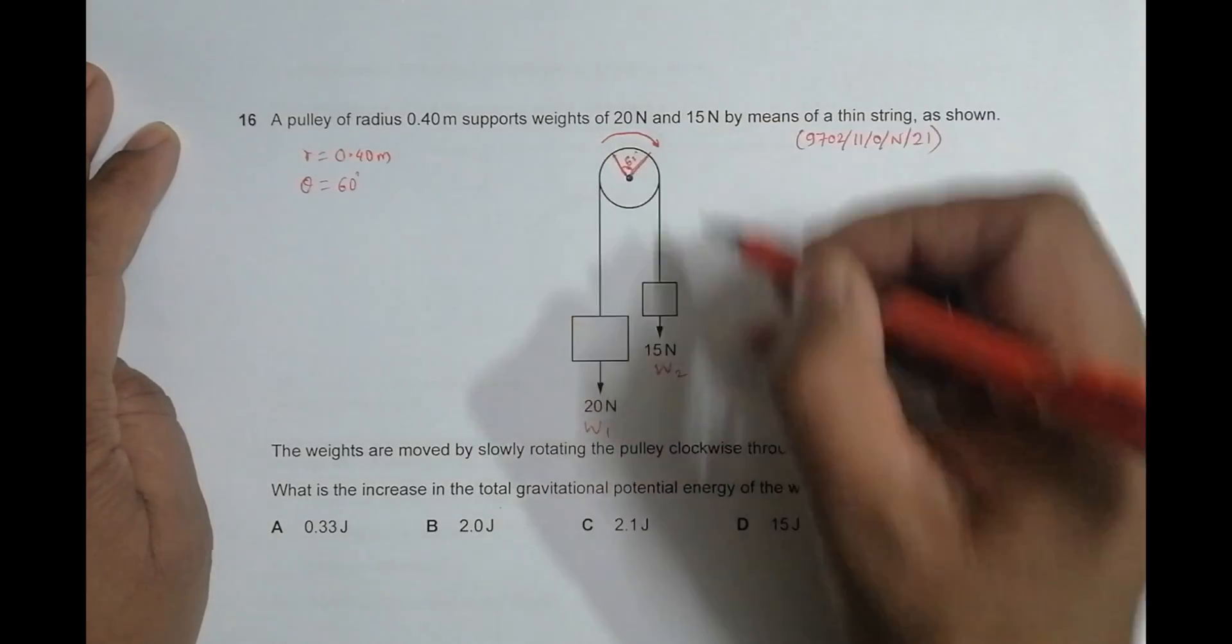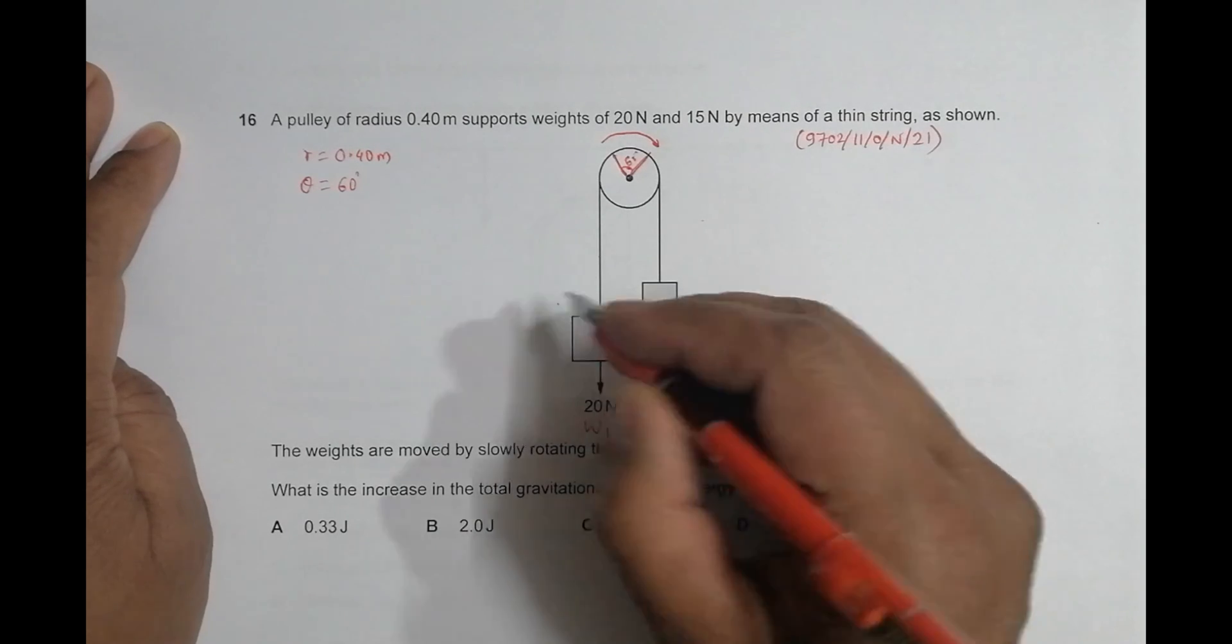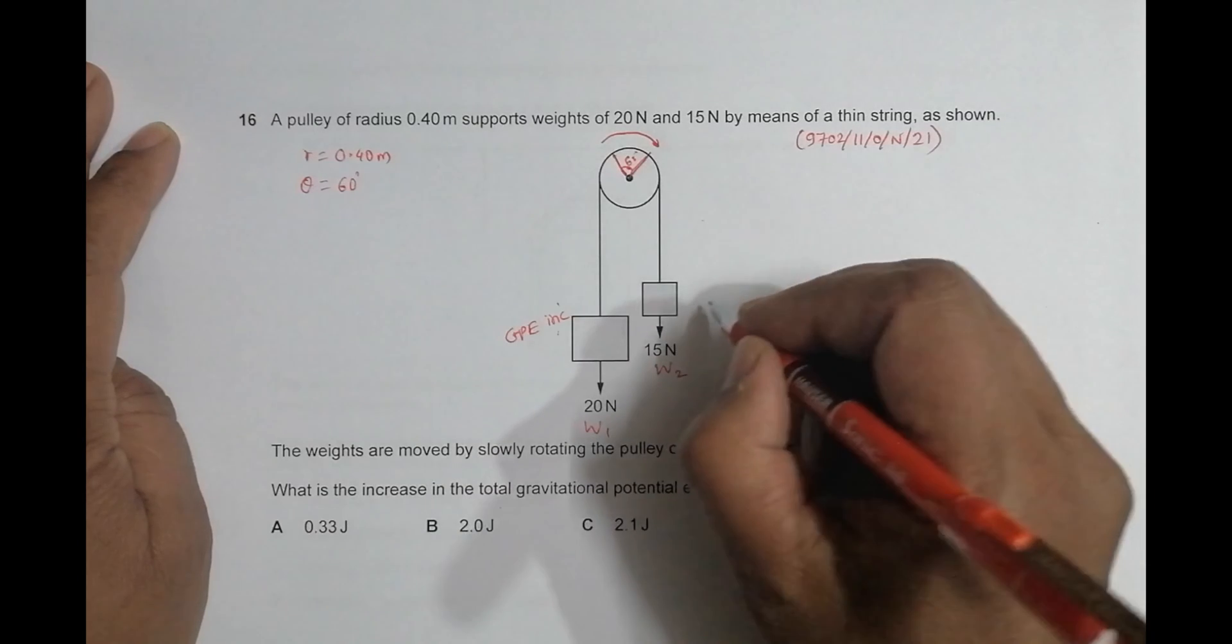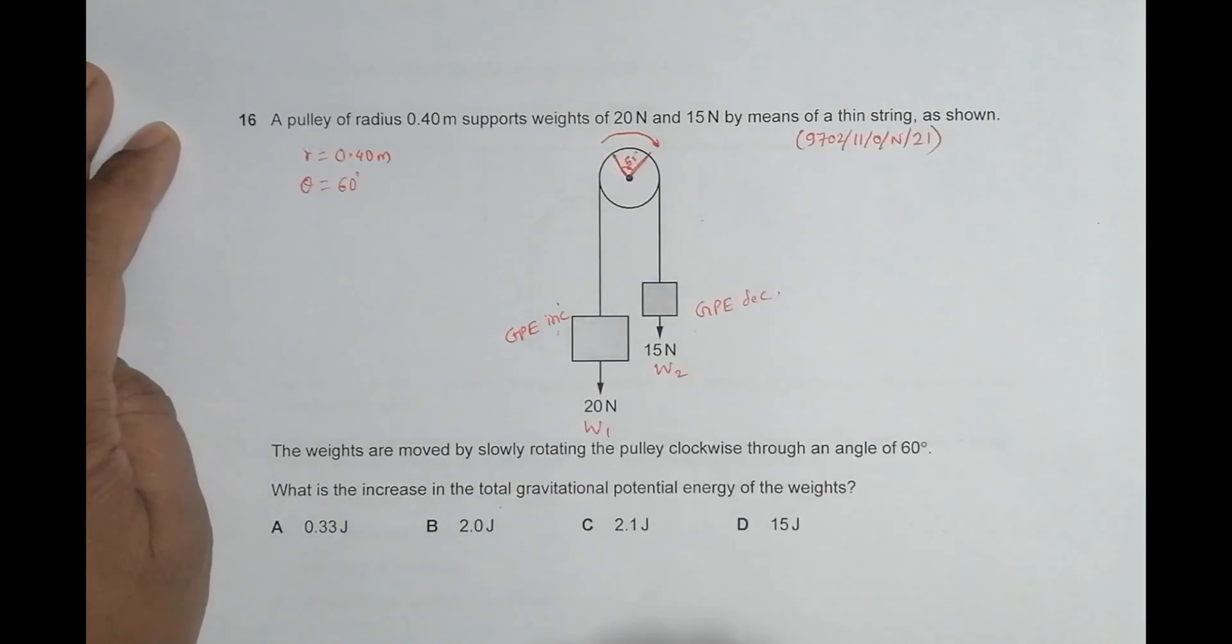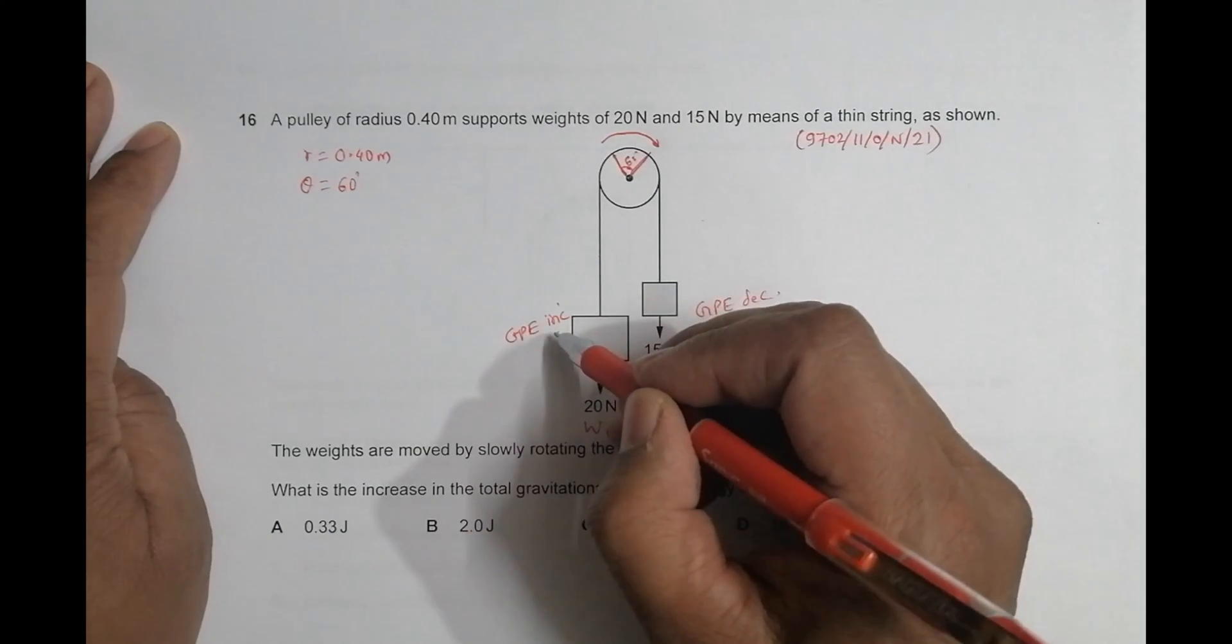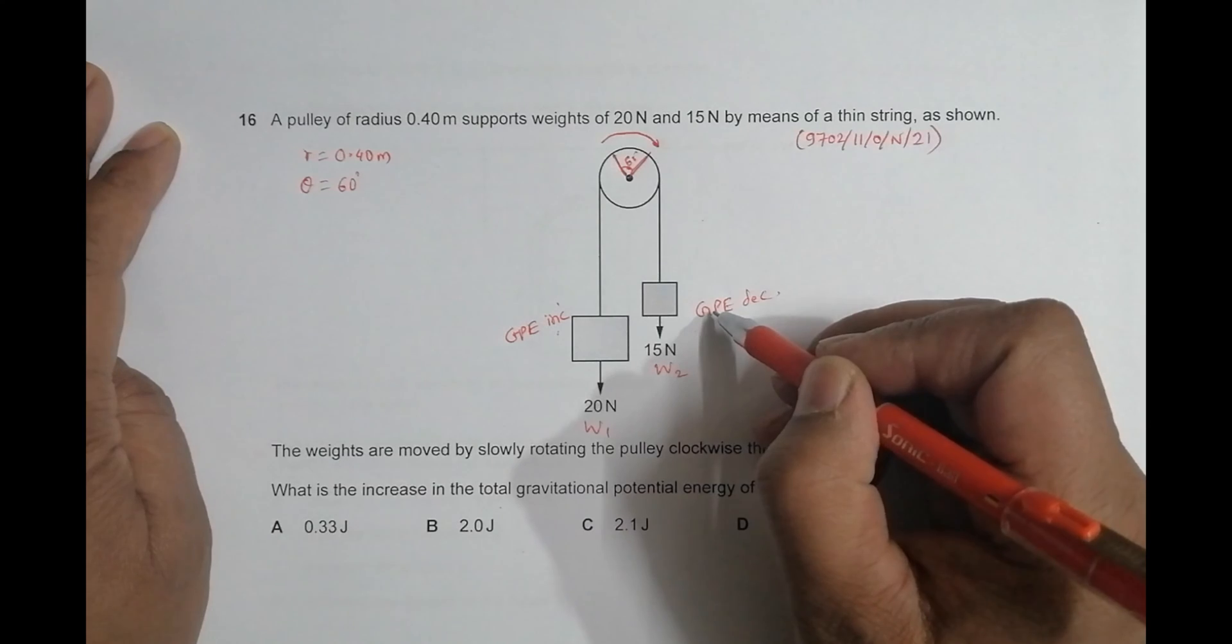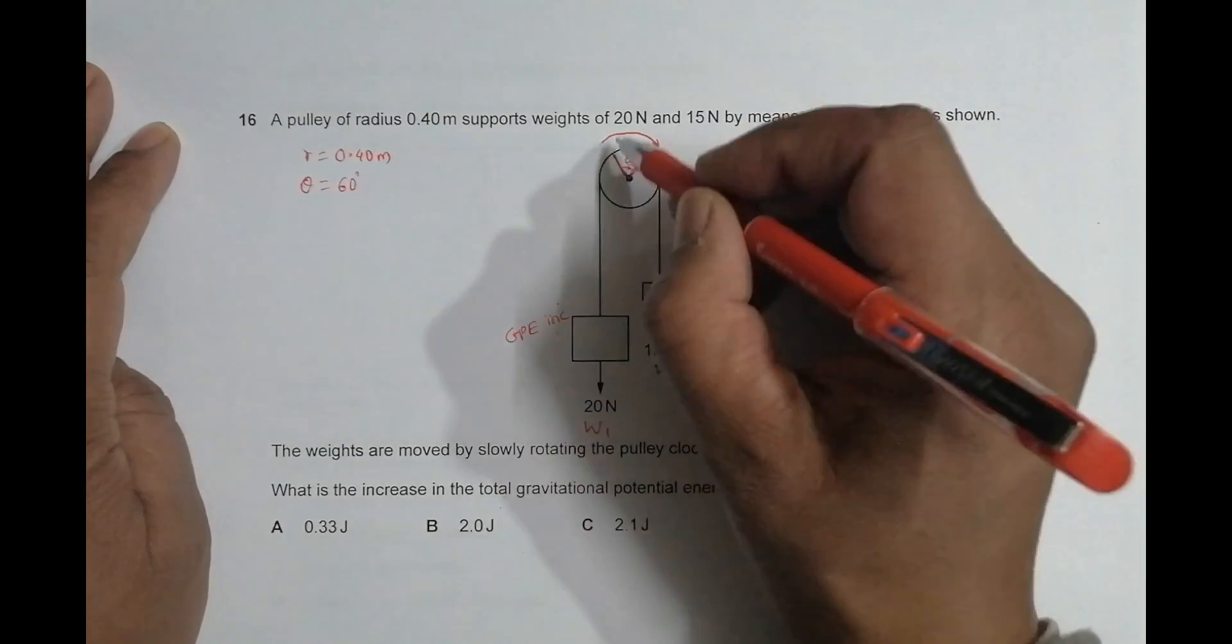So what happens here is, if I do like this, it will come down, it will come up. So it says GPE will increase, and it says GPE will decrease. And the height it moves up will be equal to the height it moves down.